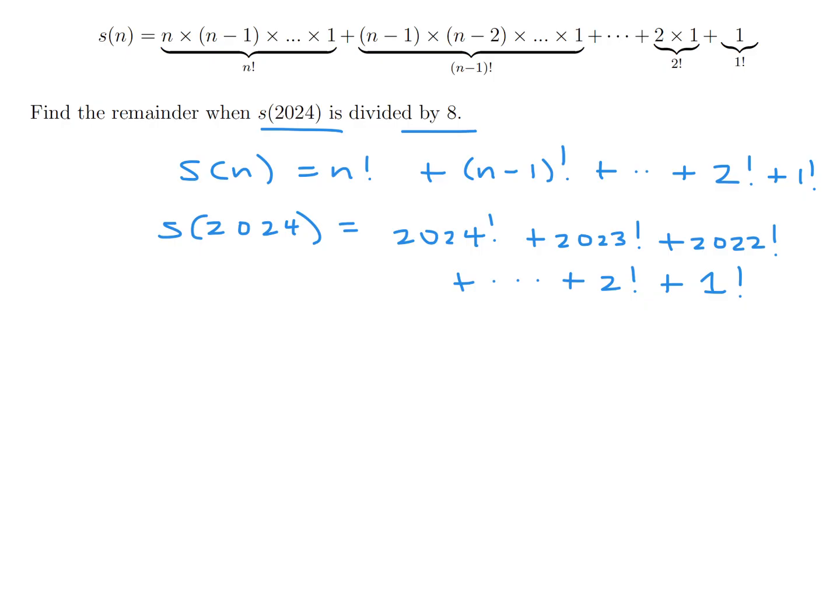Shouldn't be too big of a deal because I'll show you why. Every one of these has an 8 in it. So 2024 factorial, if you divide it by 8, there's an 8 in there. 2024 factorial is 2024 times 2023 times 2022 and so on all the way down to times 8 times 7 times 6 all the way down to 2 times 1. So there's an 8 in there. So if you divide this whole thing by 8, there's no remainder. The remainder is 0.